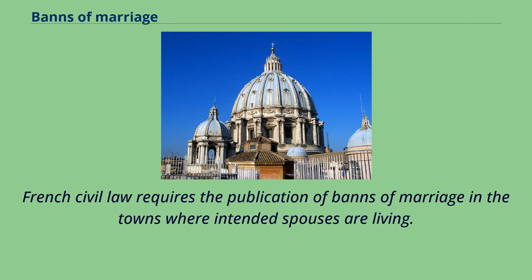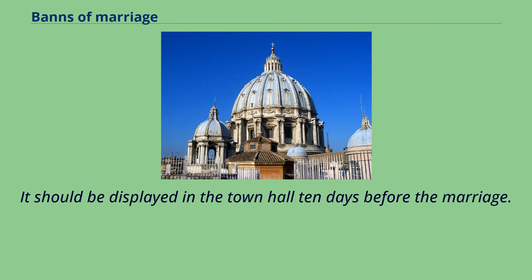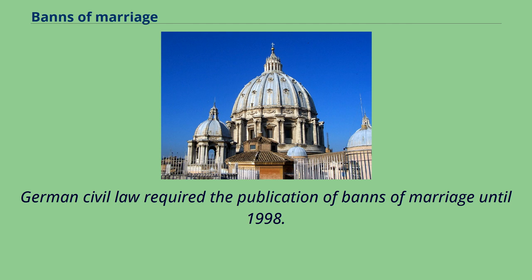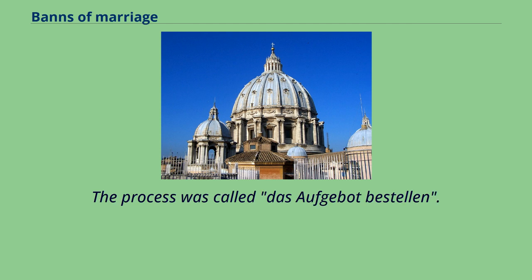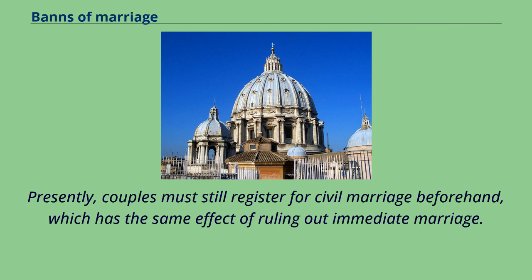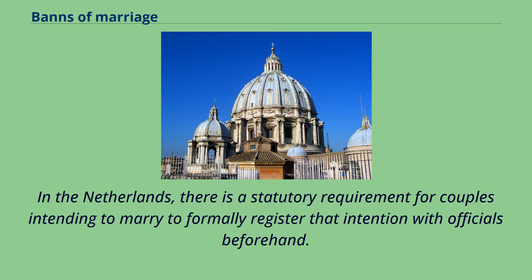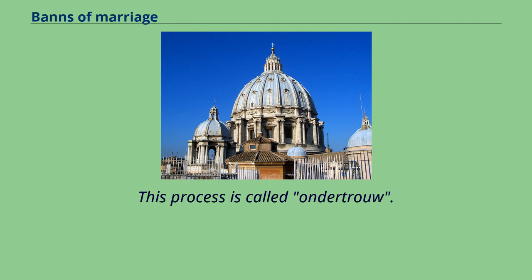French civil law requires the publication of banns of marriage in the towns where intended spouses are living; it should be displayed in the town hall 10 days before the marriage. German civil law required the publication of banns of marriage until 1998; the process was called Aufgebot bestellen. Presently, couples must still register for civil marriage beforehand, which has the same effect of ruling out immediate marriage. In the Netherlands, there is a statutory requirement for couples intending to marry to formally register that intention with officials beforehand; this process is called ondertrouw.